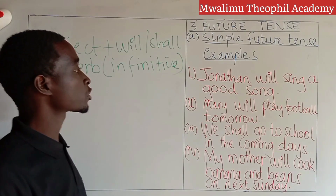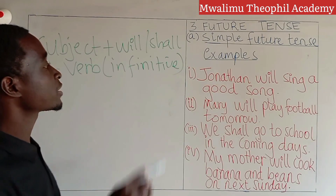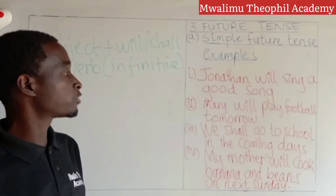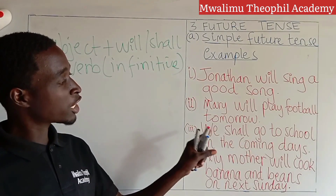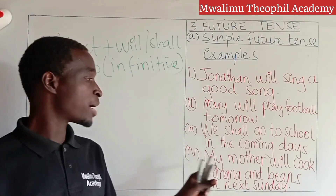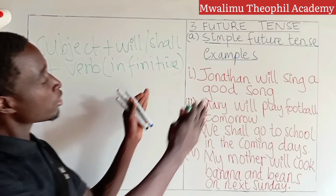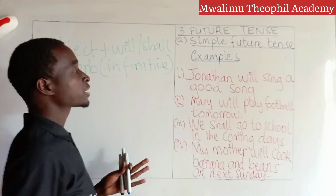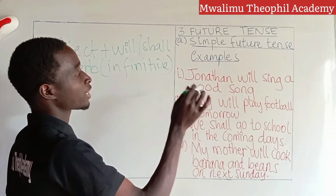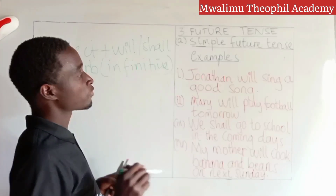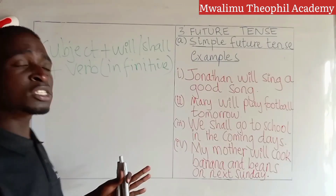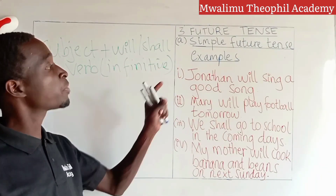Let us see different examples of sentences in simple future tense. The first example: Jonathan will sing a good song. Our second example: Mary will play football tomorrow. Our third example: we shall go to school in the coming days. Our fourth example: my mother will cook banana and beans next Sunday. In all four examples, after the subject, the word 'will' or 'shall' has been added, followed by a verb in its infinitive form: sing, play, go, and cook.